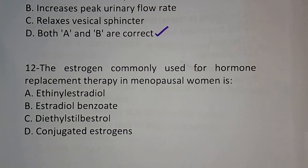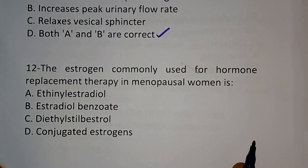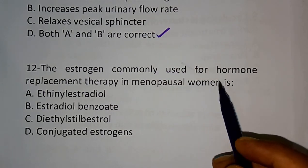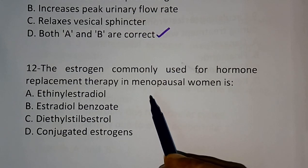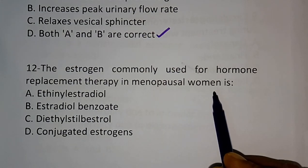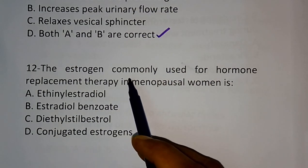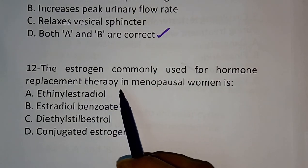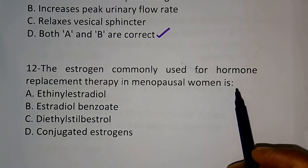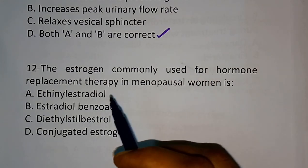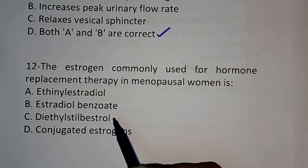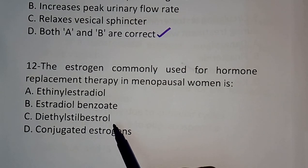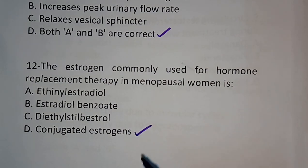Question number 12: The estrogen commonly used for hormone replacement therapy in menopausal women. Options are ethinyl estradiol, estradiol benzoate, diethyl stilbestrol, conjugated estrogen. The correct answer is conjugated estrogen.